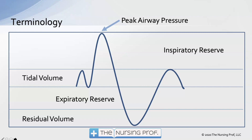Let's look at some other terms used in mechanical ventilation. One is peak airway pressure. We want to watch our patient's peak airway pressures — if we exceed the airway's ability to expand and move, we'll pop parts of the lung and the patient will develop a pneumothorax. One common ventilator alarm is the high pressure alarm, which goes off when there's too much airway pressure, such as when the patient moves in bed or coughs.